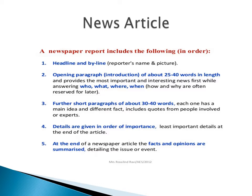How and why are often reserved for later. Third, further short paragraphs of about 30 to 40 words — each one has a main idea and different fact, and includes quotes from people involved or experts. Number four, details are given in order of importance. Least important details are normally found at the end of the article. And lastly, at the end of the newspaper article, the facts and opinions are summarized, detailing the issue or events.